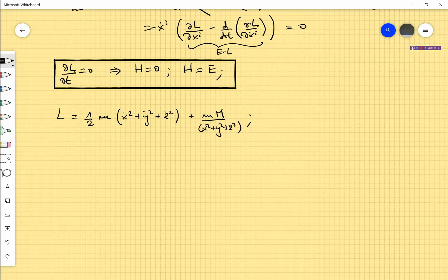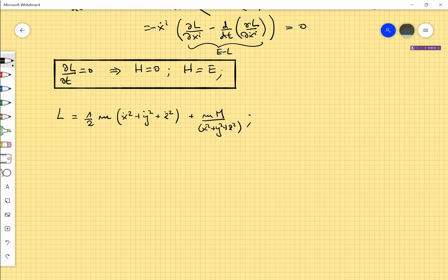Now here you don't see any obvious cyclic coordinate, but you know that if you change from Cartesian coordinates to spherical coordinates you will get one. The change from Cartesian to spherical coordinates was performed in the metric in one of the previous videos.